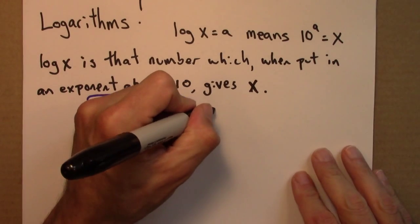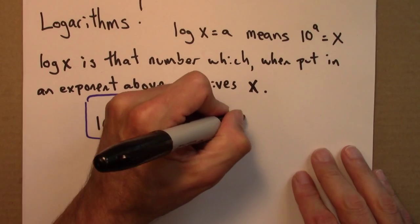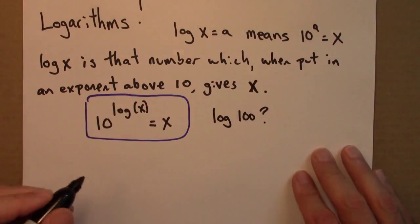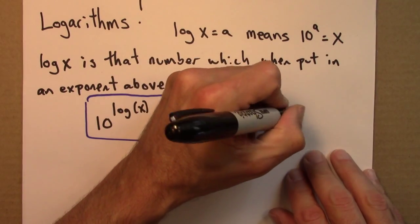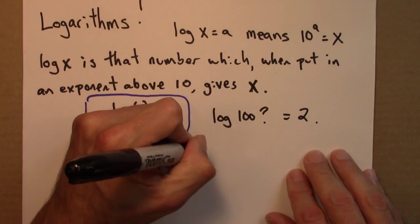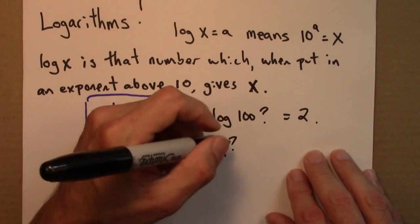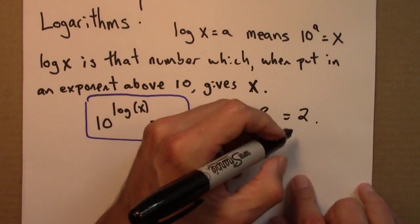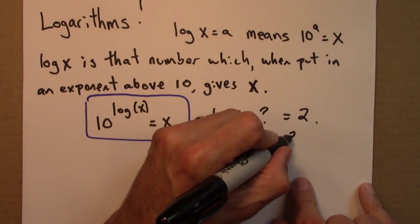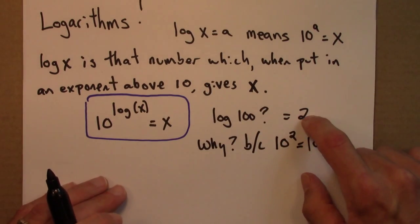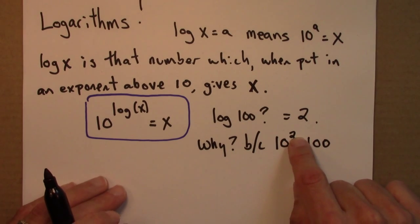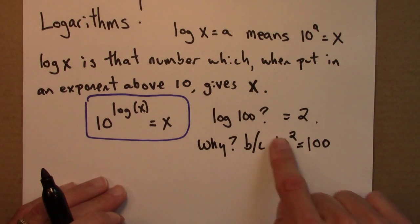Log of 100, what would that be equal to? Well, I claim that it's equal to 2. Why? Because 10 to the 2 equals 100. 2 is that number which, if I put it up in an exponent for 10, gives me 100. So log of 100 is 2.